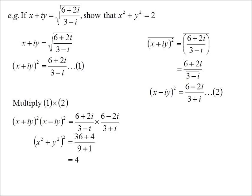So on the left hand side now I have (x²+y²)². And on the right hand side on the top of the fraction I'll have 6²+2² over 3²+1² which is 4. So I now know that (x²+y²)² is 4.